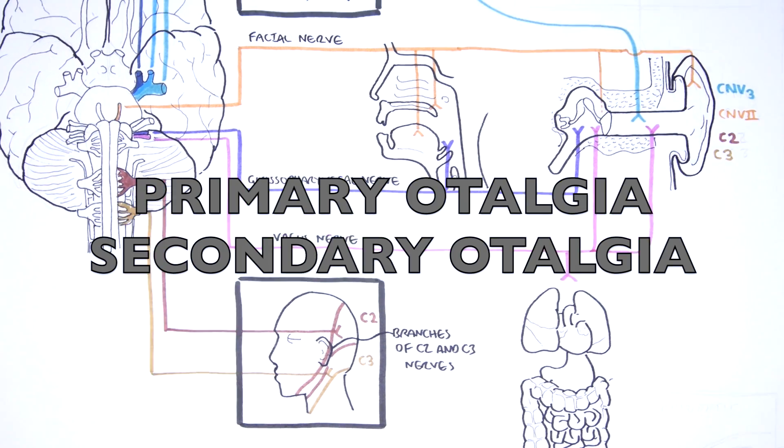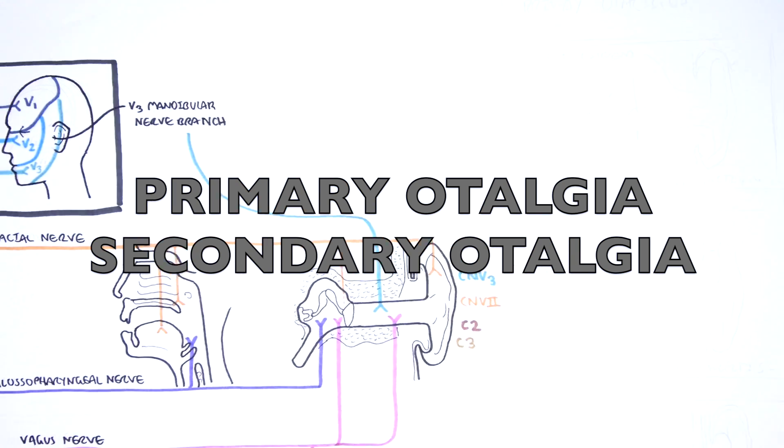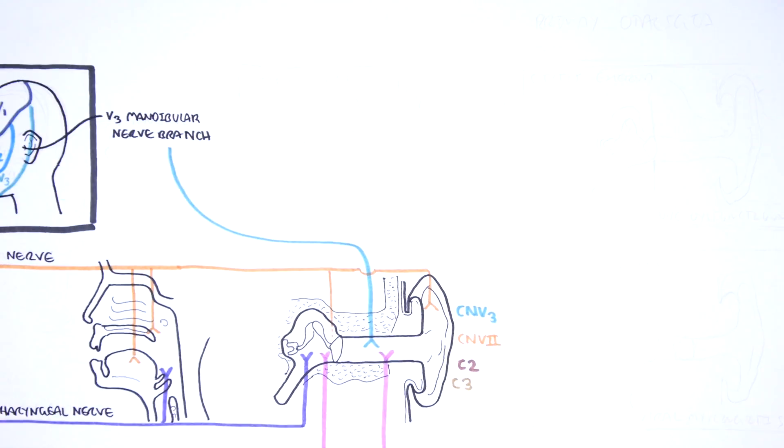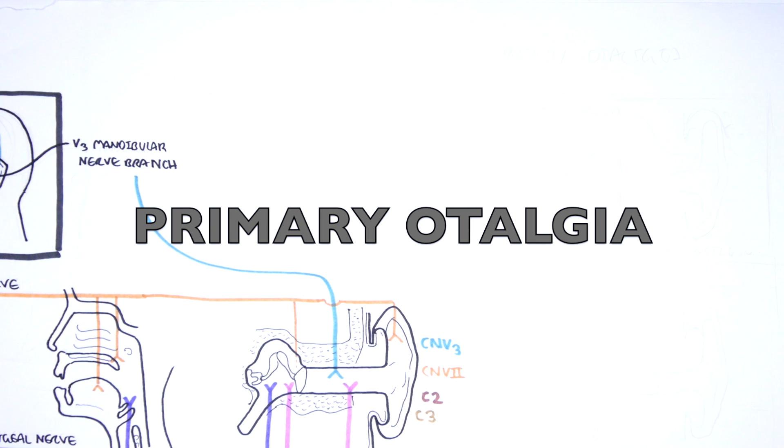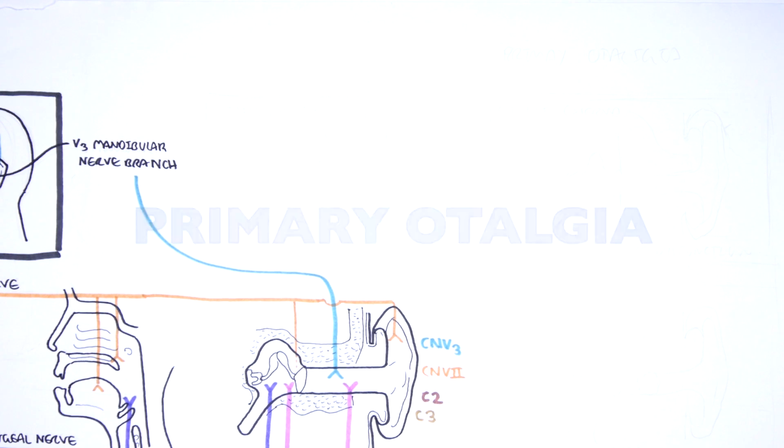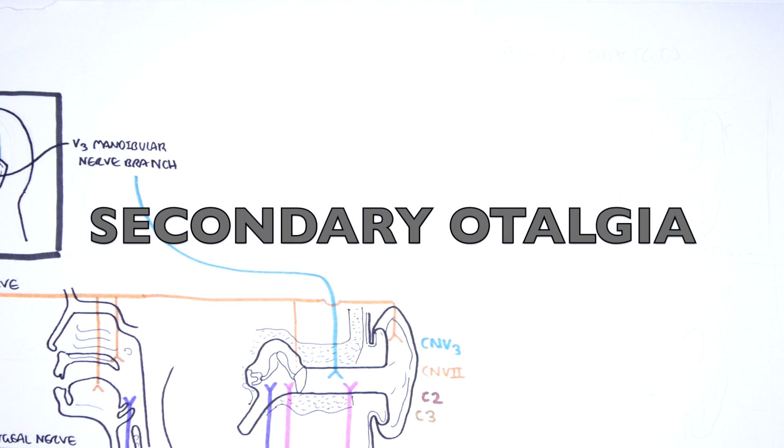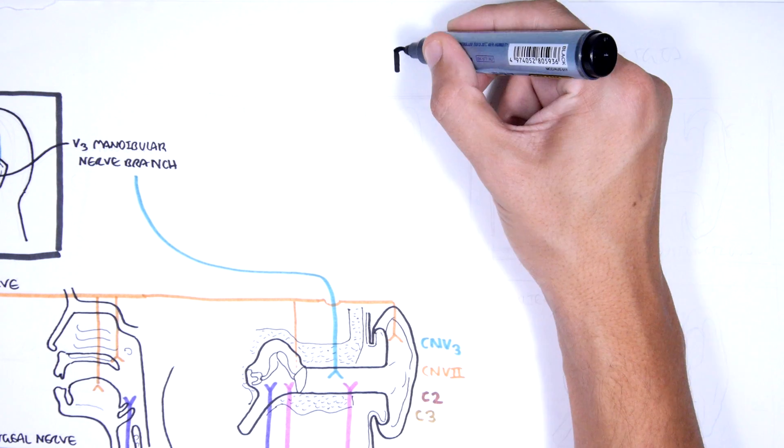Pain that originates from the ear is called primary otalgia, and the most common causes are otitis media and otitis externa, which again is more common in children. Secondary otalgia is referred pain and is more common in adults.